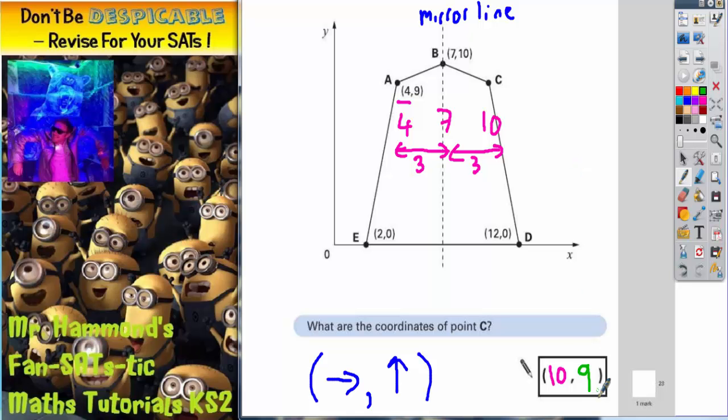The 9 up comes from the fact that C is level with A. They have the same distance up off the floor. So if A is 9 up, C must also be 9 up, which is why it's 10 across and 9 up.